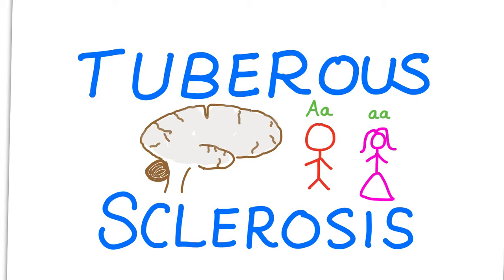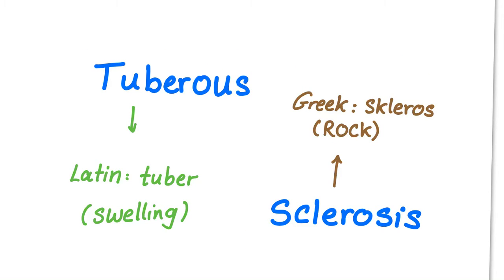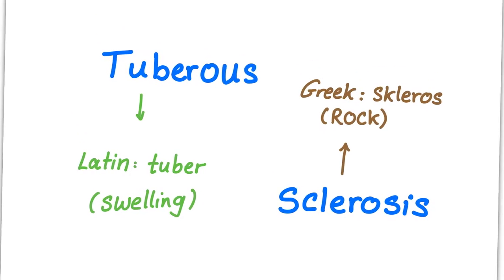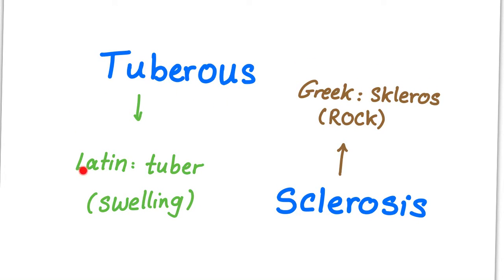Tuberous sclerosis is a very serious disease that affects people; it is autosomal dominant and involves many lesions and tumors all over the body. What does the name even mean? 'Tuberous' is Latin — 'tuber' means swelling. 'Sclerosis' is from the Greek word 'scleros,' which means rock hard. So the literal meaning of tuberous sclerosis is hard swelling.